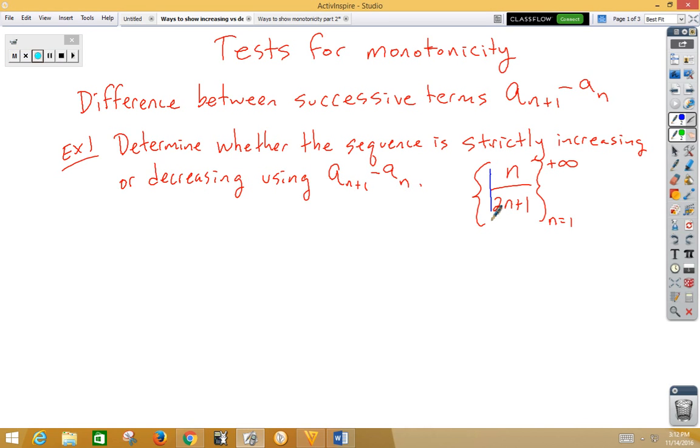We have brace notation, which means that our a sub n is n over 2n plus 1. So if a sub n is n over 2n plus 1, then a sub n plus 1 means we need to replace all the n's with n plus 1.